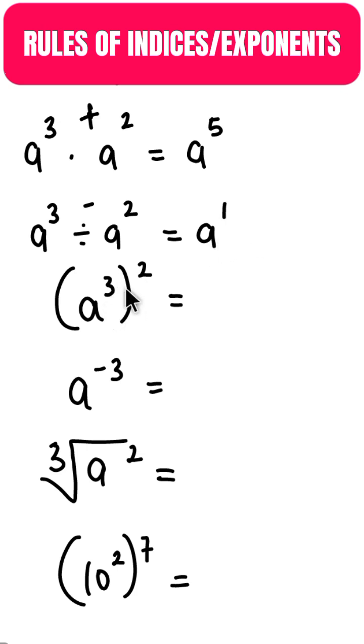When you have indices in brackets and it's raised to a power, all you have to do is to multiply the power inside and the power outside. This will be 3 times 2 is 6, so our answer to remove the brackets will be equal to a raised to power 6.